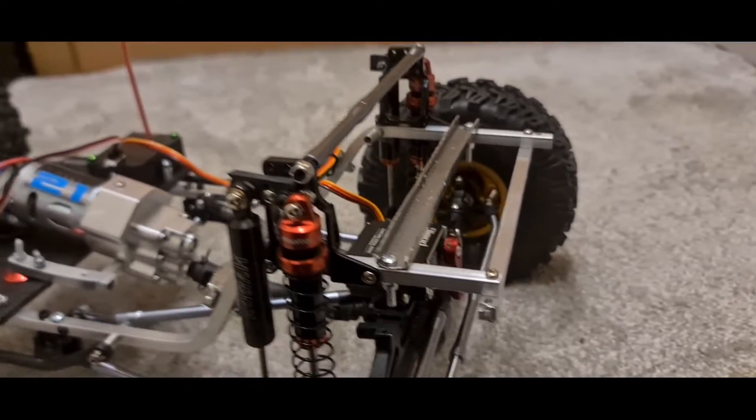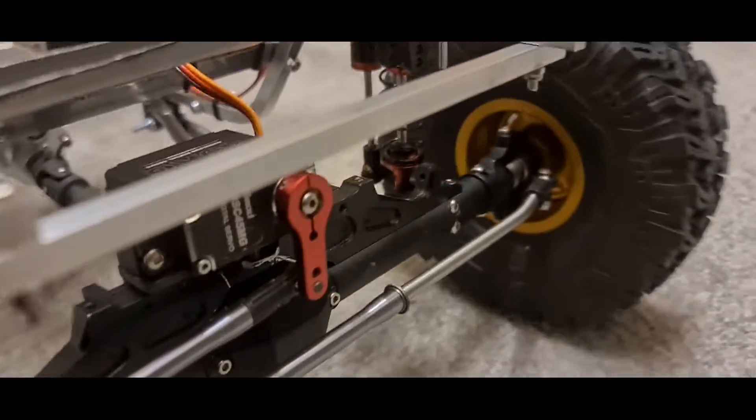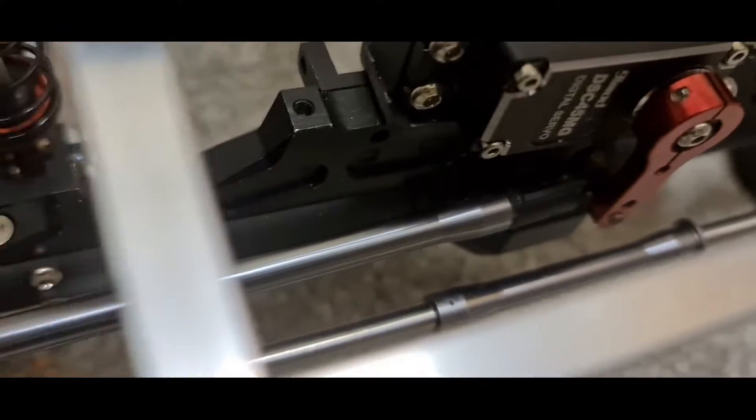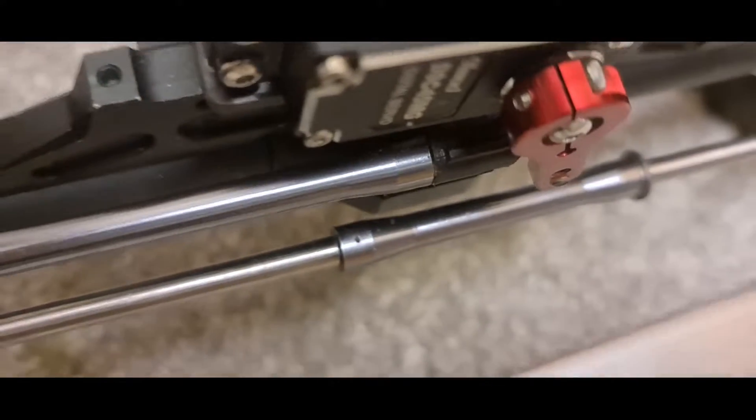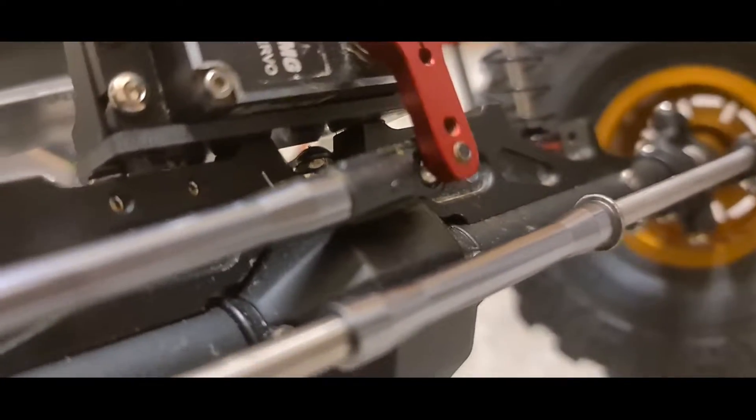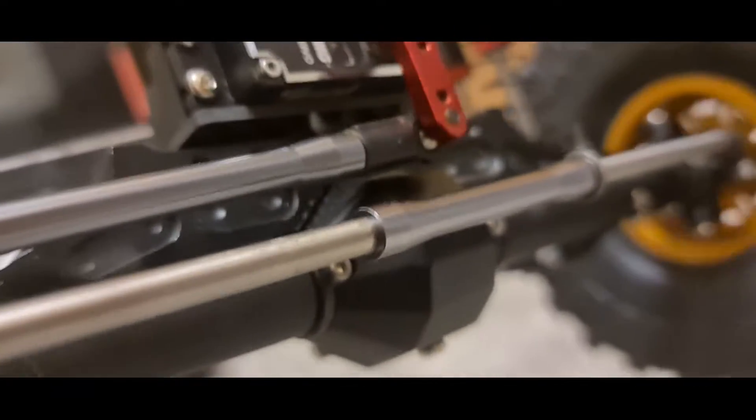We're just about fully braced up now. We've got some very fine tolerances going on around the front. You'll notice at full turn we're almost touching but not quite on the steering bar, which is good. We've got a very fine tolerance inside there for the steering servo horn on the pumpkin itself—almost touches but doesn't quite.